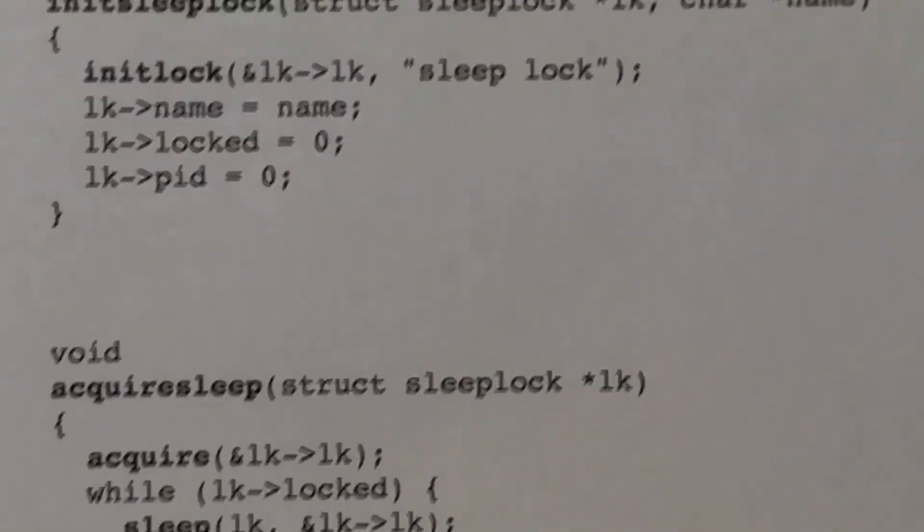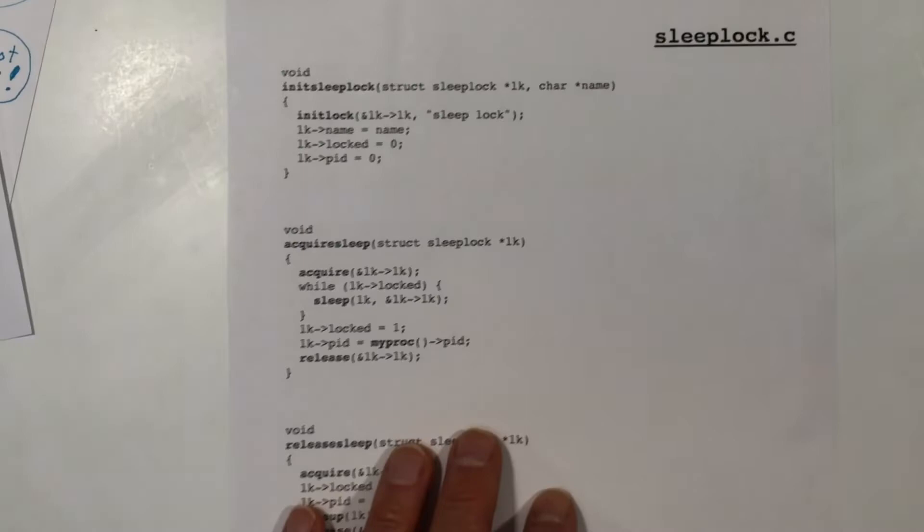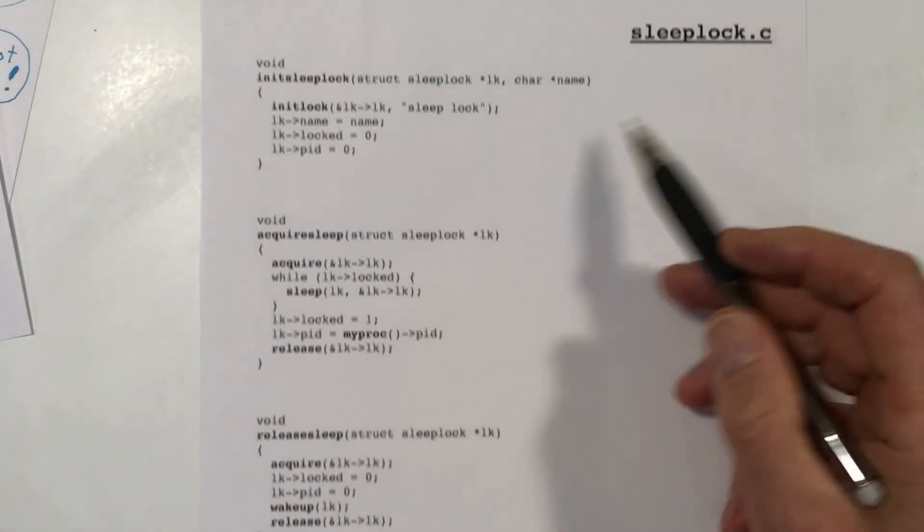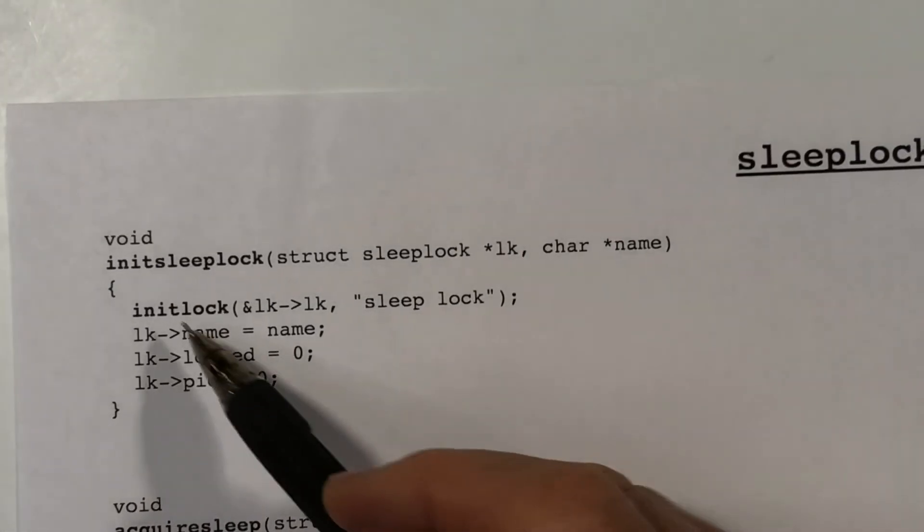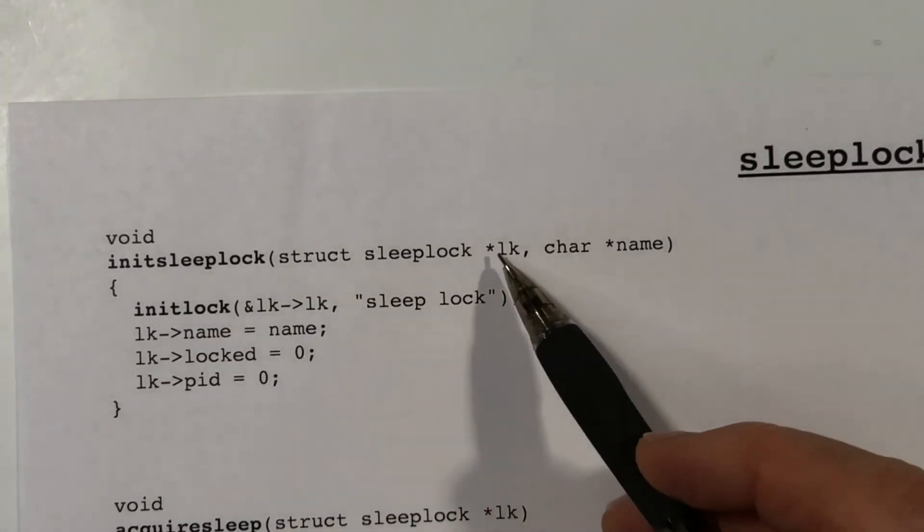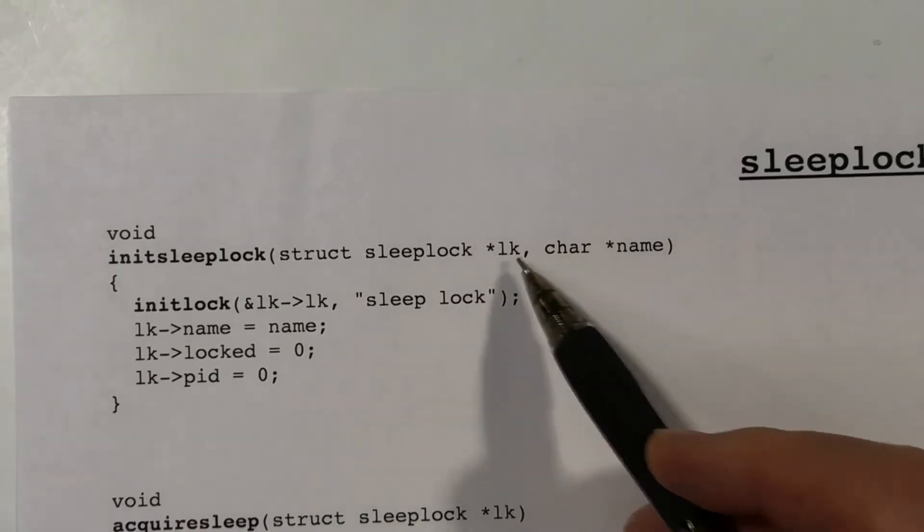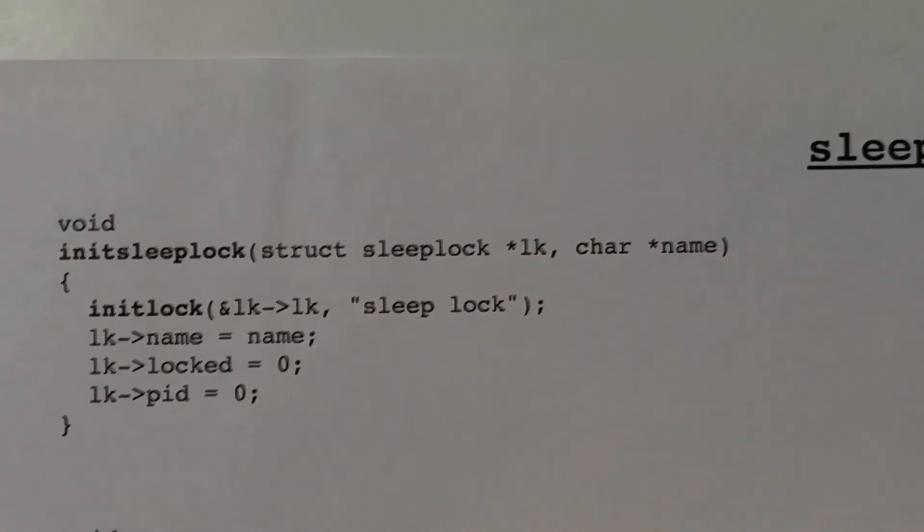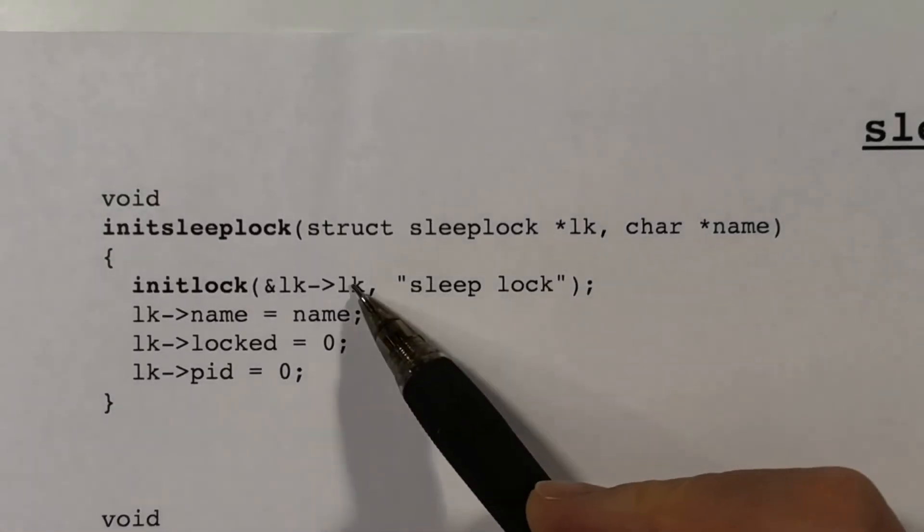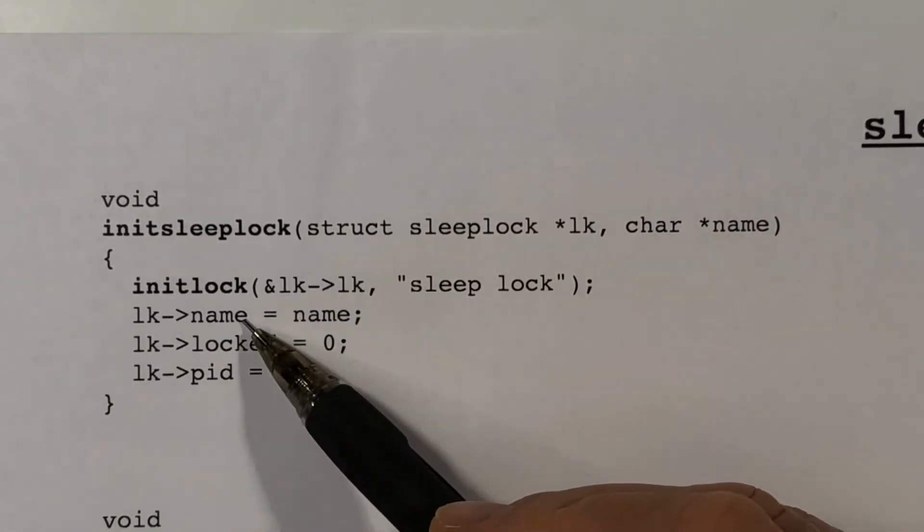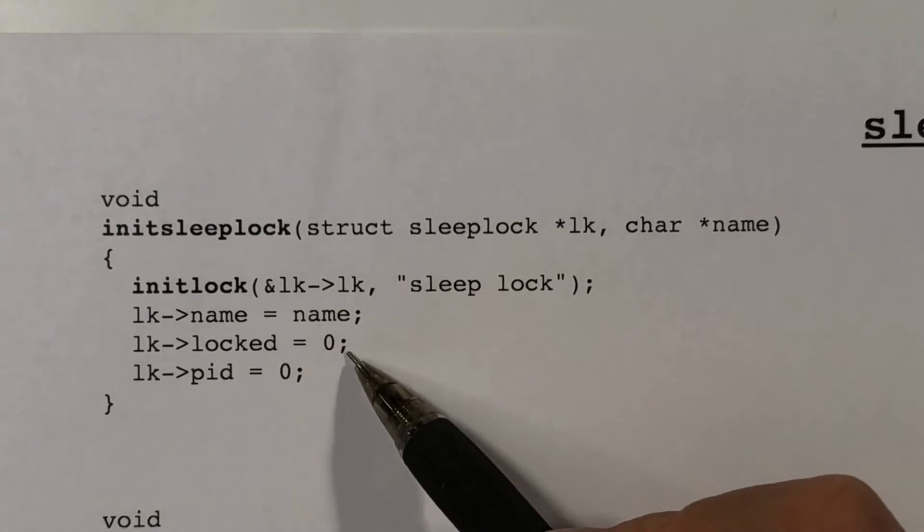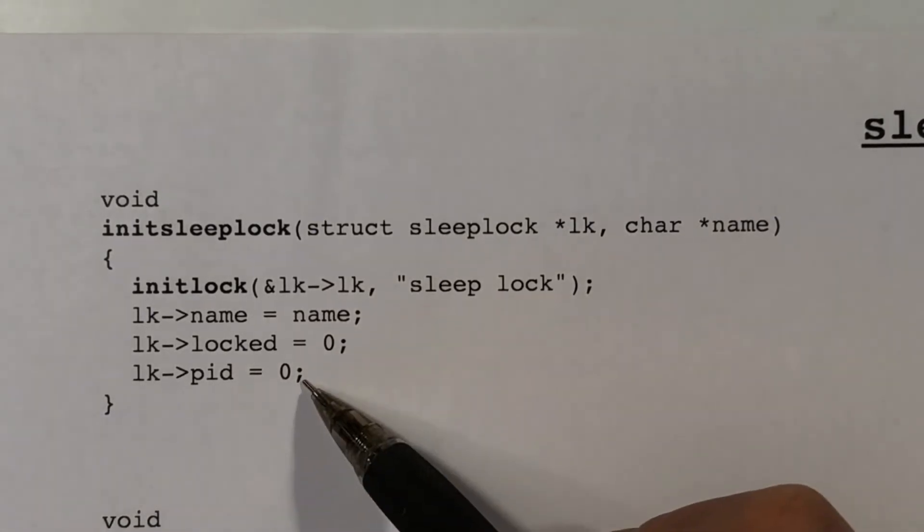Now let's look at the functions. And the entire file, sleep lock.c, just consists of these four functions. So they're pretty straightforward. To initialize the sleep lock, we are passed a pointer to a sleep lock and a name. And we initialize the spin lock here that's in that lock. And we also initialize the name. And we set the lock field to indicate that this lock is not currently held, and no process ID.